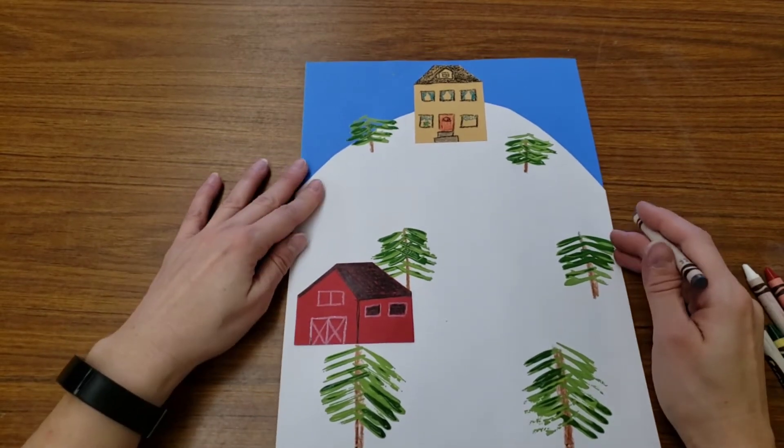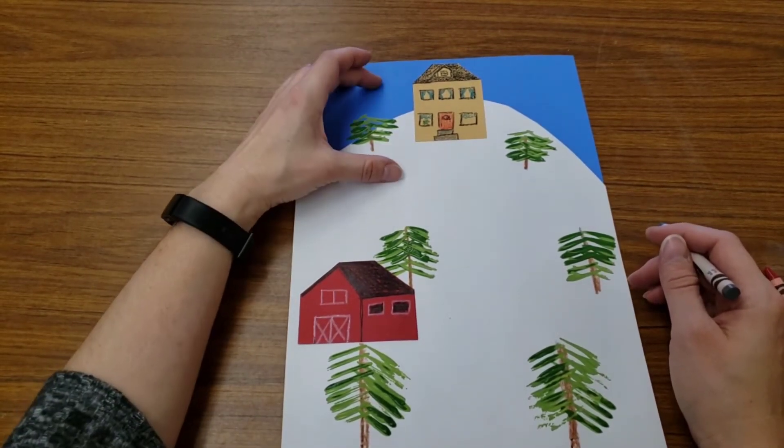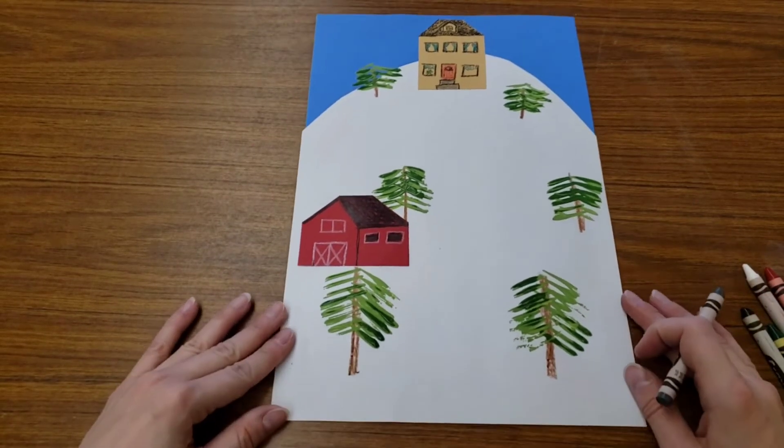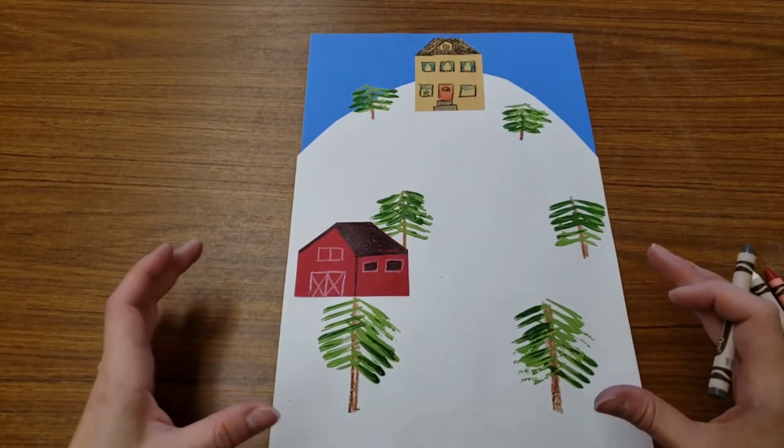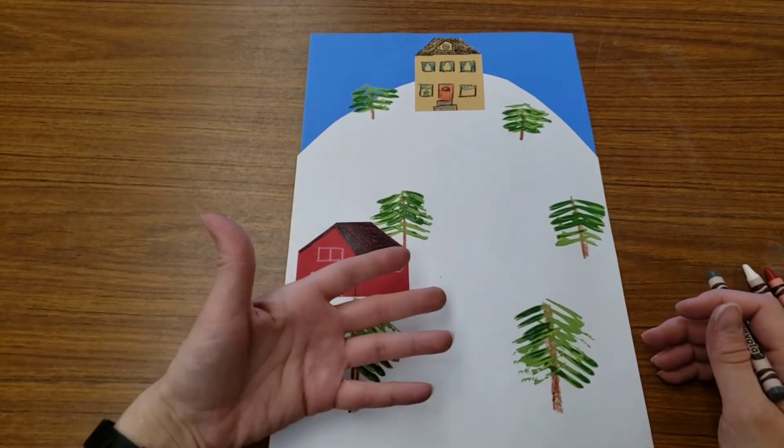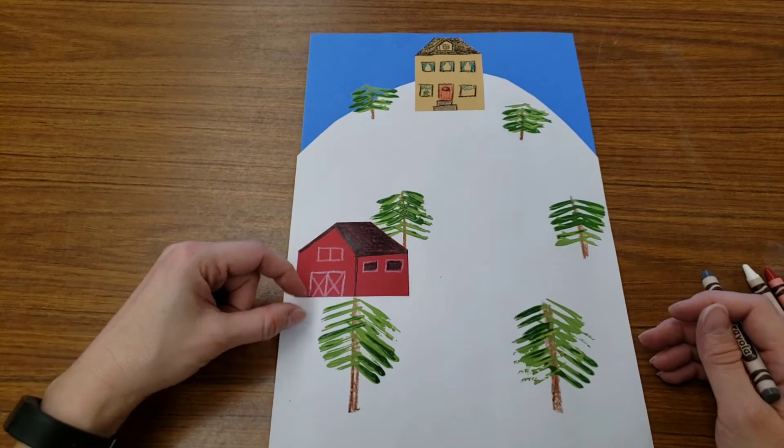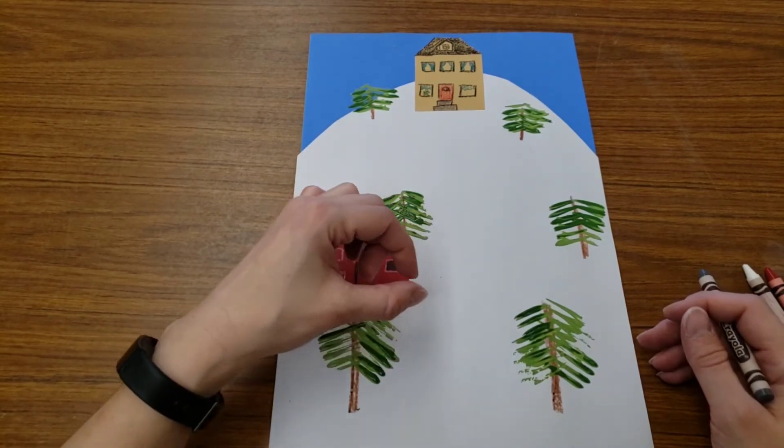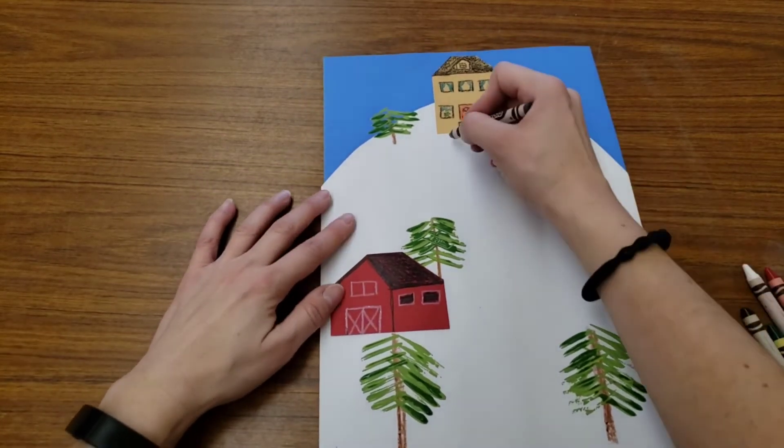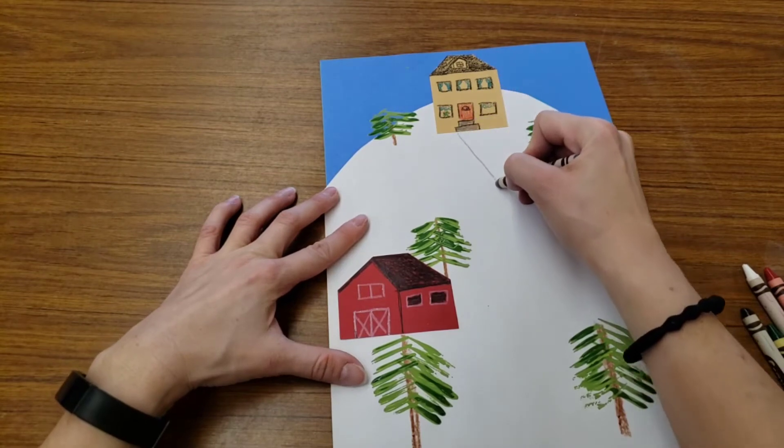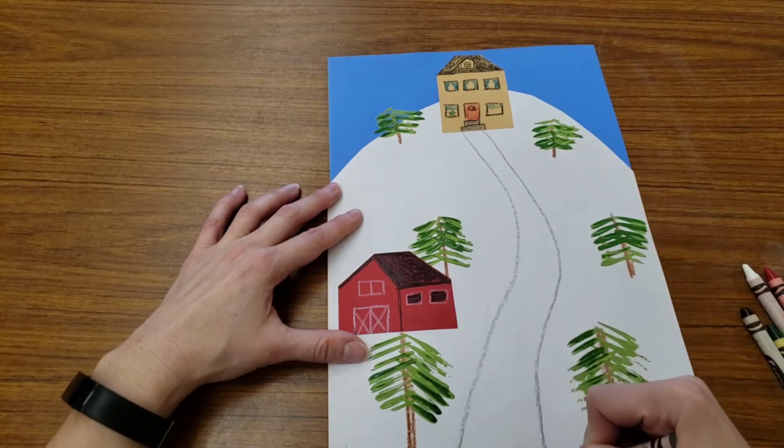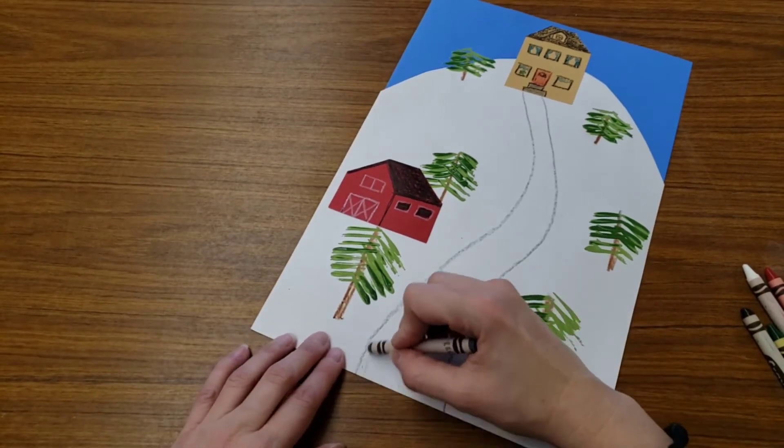Our next task is to add details. So things that are far away will be small, things that are close will be big. We also have to think about scale. We have to make objects the right size compared to other objects. For example, I have a barn. If I were to add some farm animals around the barn, would they be small or would they be as tall as the barn? They would be small. We don't want a cow that's bigger than our barn, so we have to think about size.